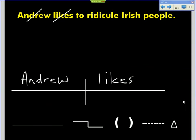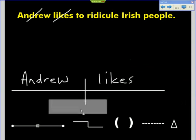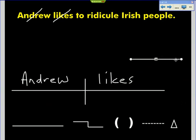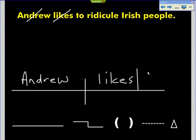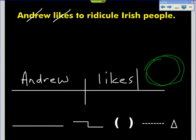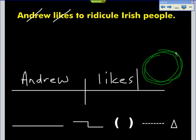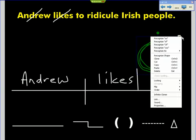We know a fair amount. We know that this infinitive phrase is a direct object, so we need to mark direct object with a horizontal line. Somewhere over here will be our infinitive phrase. Because if the sentence were something nicer, like 'Andrew likes puppies,' the word puppies would fall right here. But of course we have something more complex.